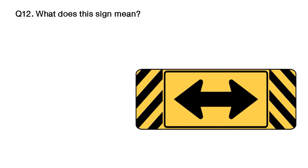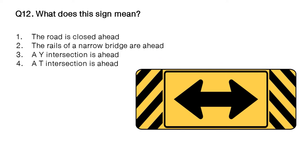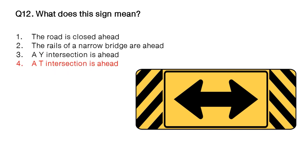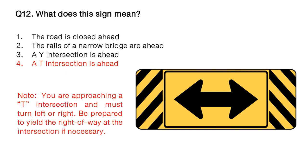Question: what does this sign mean? Option number 1: the road is closed ahead. Option number 2: the rails of a narrow bridge are ahead. Option number 3: a Y intersection is ahead. Option number 4: a T intersection is ahead. The answer is option number 4: a T intersection is ahead. Note: you are approaching a T intersection and must turn left or right. Be prepared to yield the right-of-way at the intersection if necessary.